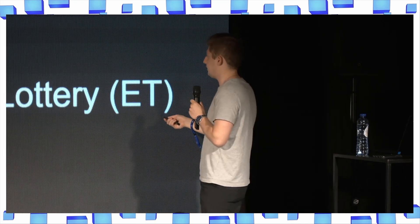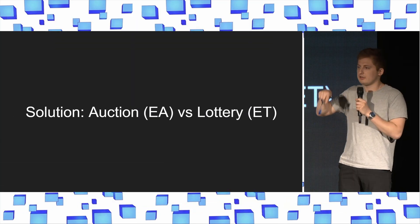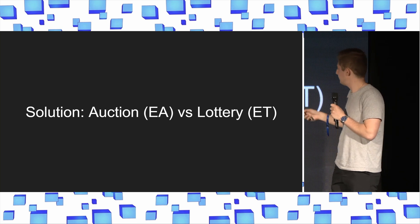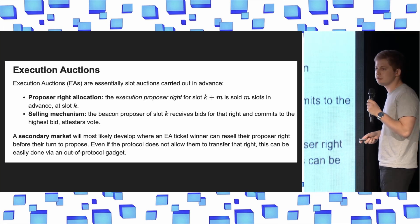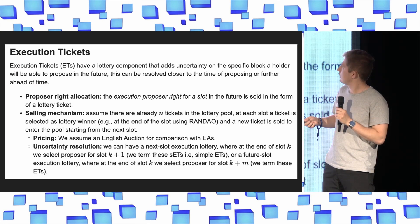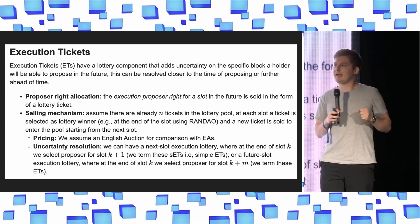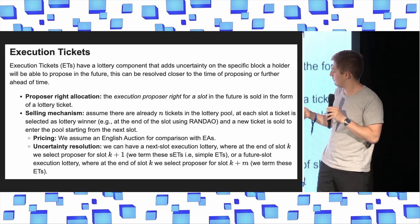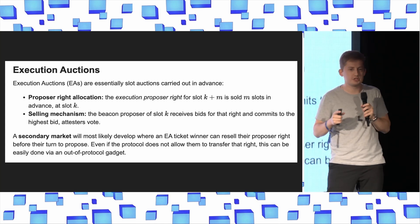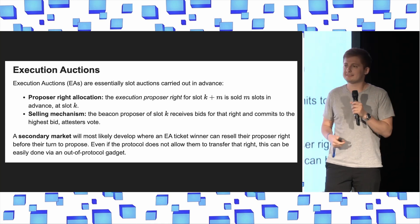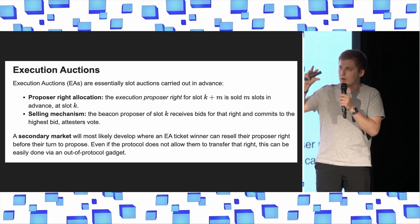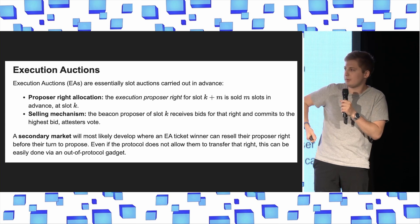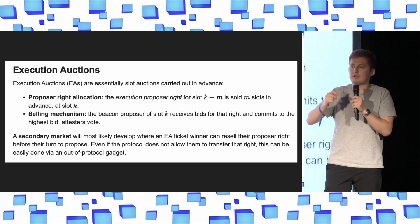How do execution auctions work? Quite simply, an execution auction is: I am selling the right to the execution payload 32 slots in advance. At slot K, the protocol sells the right to be the execution payload proposer in 32 slots. So it's like PBS, but your right comes in the future.